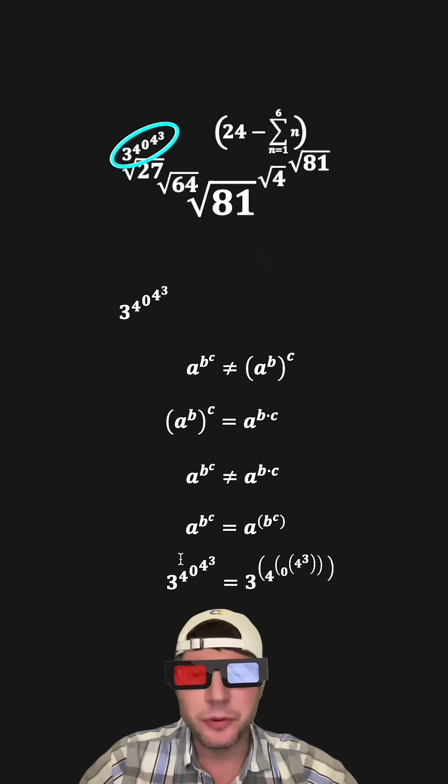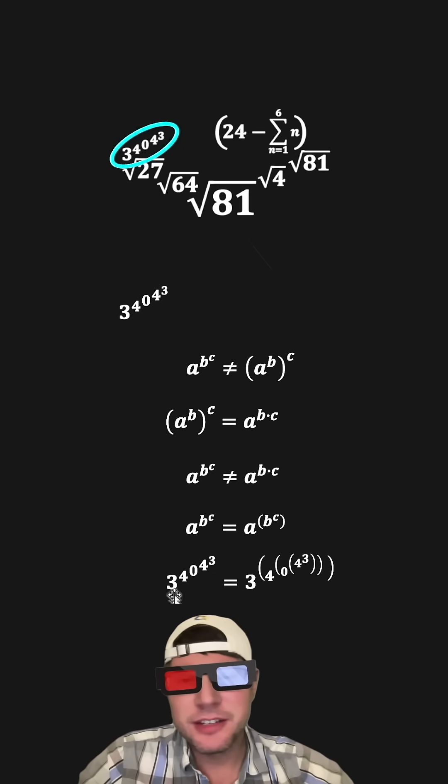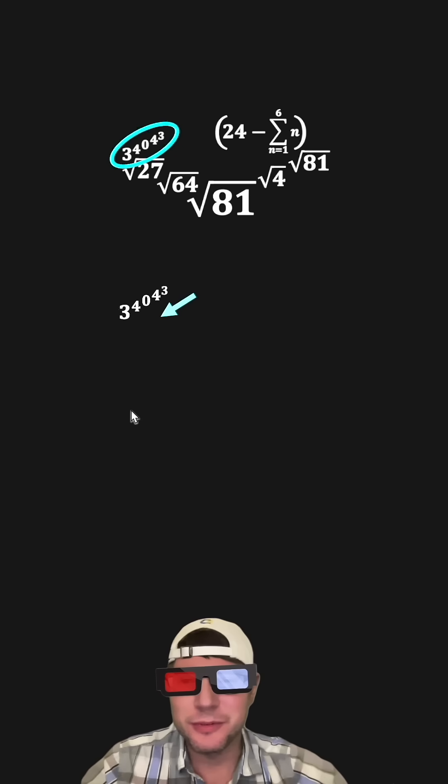So for example, 3 to the 4 to the 0 to the 4 to the 3, you would do the 4 to the 3 first, then 0 to that, then 4 to that, then 3 to that. So this is the correct way to do power towers. You don't end up just multiplying.